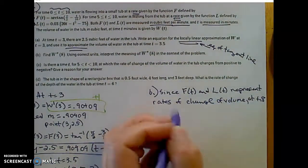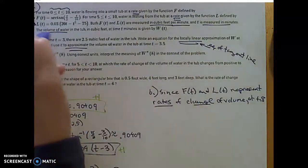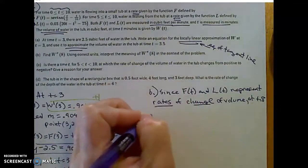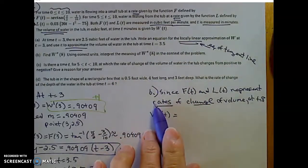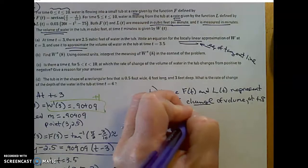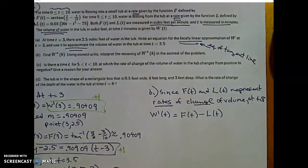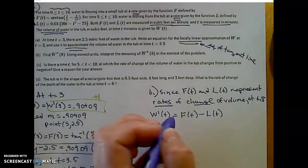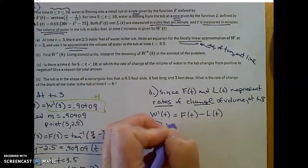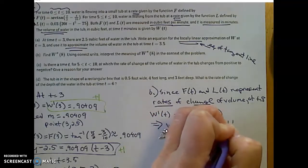I'm going to refresh my memory. Since f of t and l of t represent rates of change of volume, and w represents the volume of water in the tub, the rate of change of volume in the tub, which would be w prime, is really just equal to the rate at which the tub is filling minus the rate at which the tub is leaking. That implies that the second derivative of w is really just going to be f prime of t minus l prime of t.